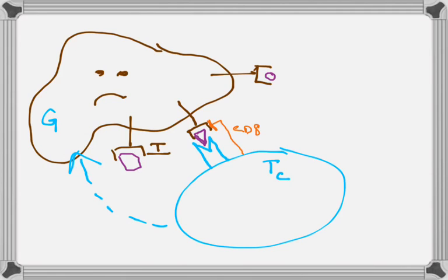To recap: MHC1 presents pieces of a pathogen on any nucleated cell. The T cell receptor and CD8 co-receptor interact with MHC1, and the TC cell kills the infected host cell by secreting granzymes and perforin.